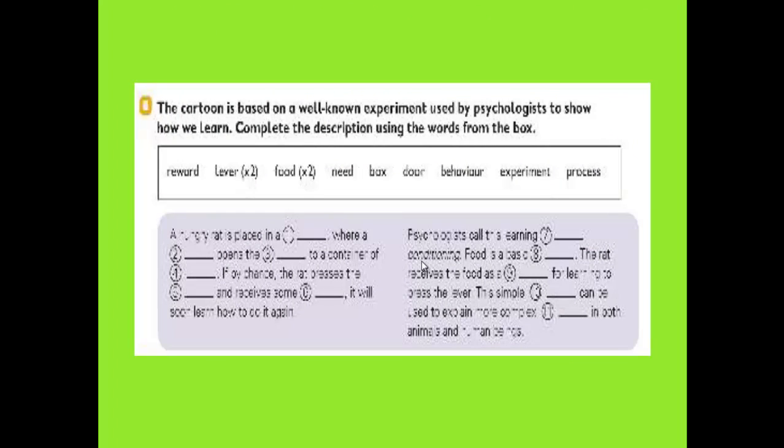The cartoon is based on a well-known experiment used by psychologists to show how we learn. Complete the description using the words from the box. We have the following words: reward, lever (use twice), food (use twice), need, box, door, behavior, experiment, and process. So we want to fill in the spaces with these words, but we have 11 spaces.